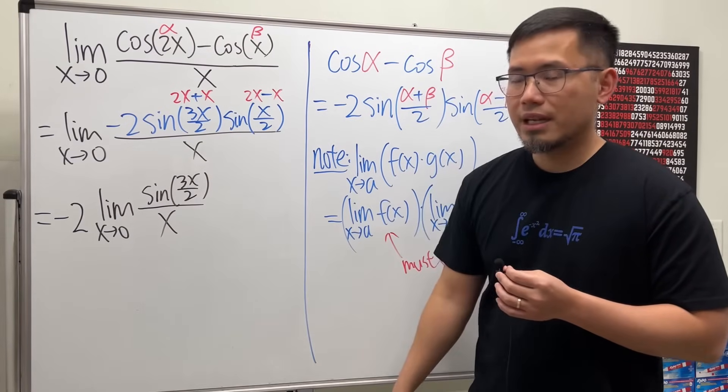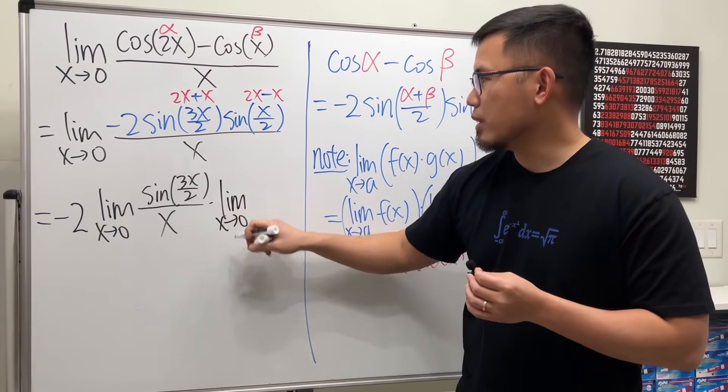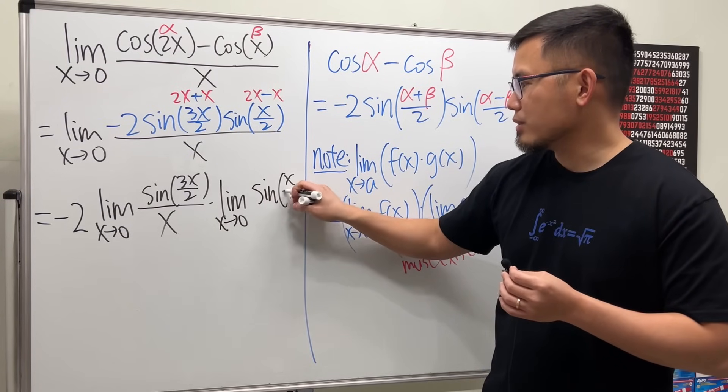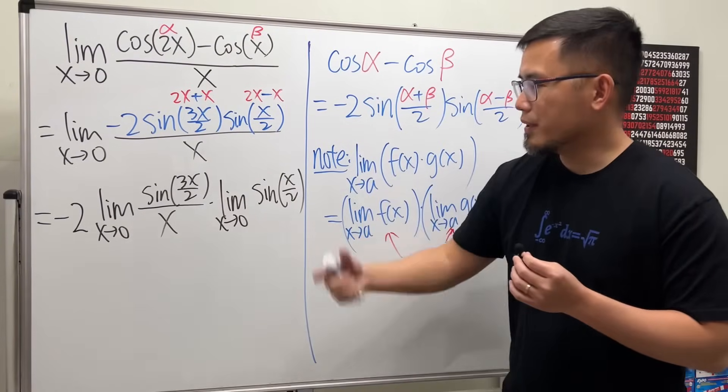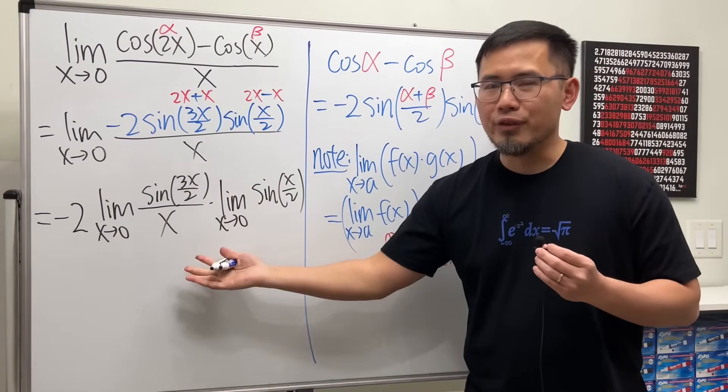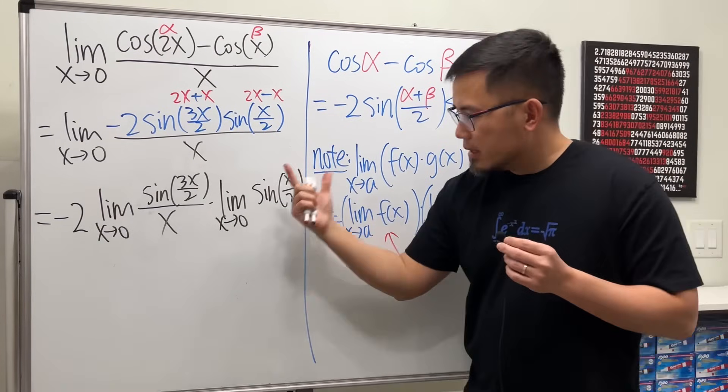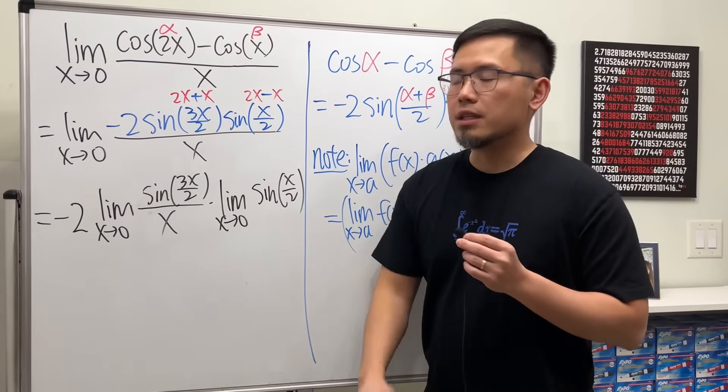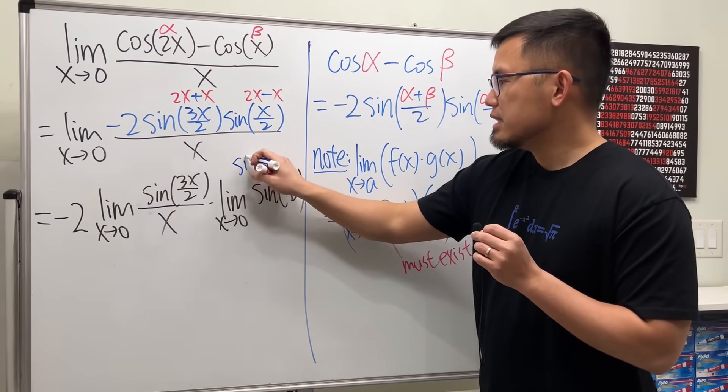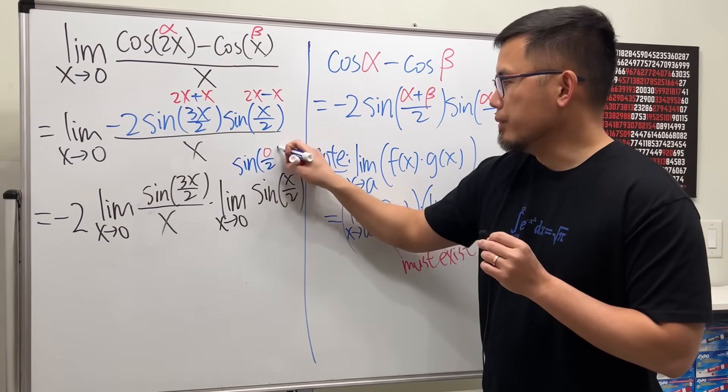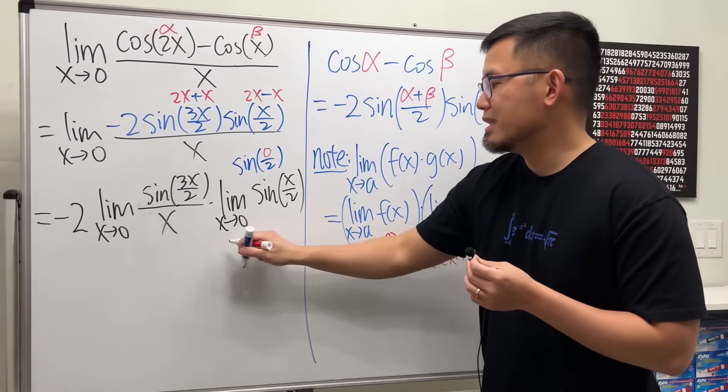And then times the limit as x approaching zero, just this, which is sine of x over 2. And now we just have to figure out these. If they both exist, then we can just multiply them and that'll be the answer. Now here's the deal, this limit is actually very easy because we can just plug in zero into this x, and then we get sine of zero over 2, which is just the same as sine of zero, and that will just be zero.